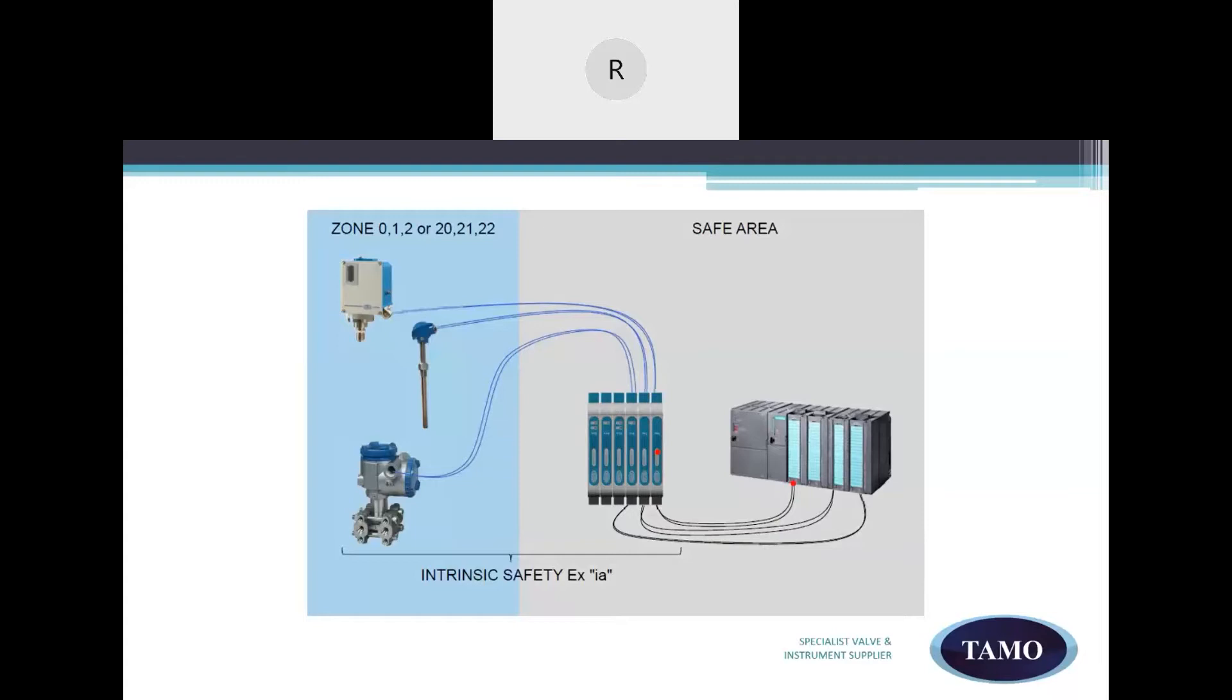An intrinsically safe system is an assembly of interconnected intrinsically safe apparatus in the hazardous area, associated apparatus in the safe area and interconnecting cables. The purpose of the intrinsically safe loop calculation is to confirm that the selected combination of intrinsically safe apparatus, associated apparatus and interconnecting cables are forming an intrinsically safe loop that can be used in the hazardous area. The intrinsically safe device found in the hazardous area is an electrical device in which all the circuits are intrinsically safe. But an associated device found in the safe area is an electrical device where only part of the circuit is intrinsically safe.